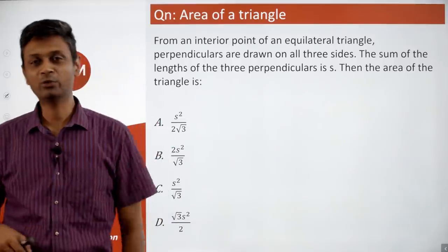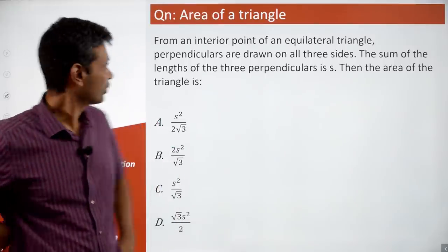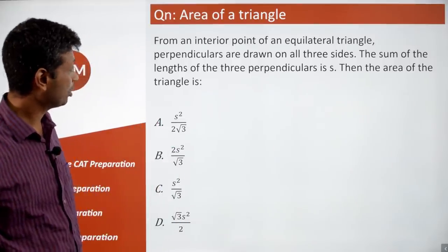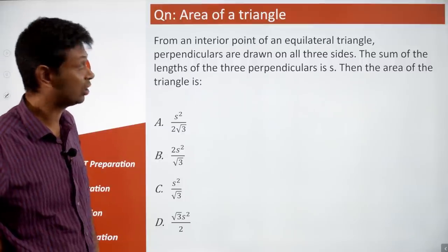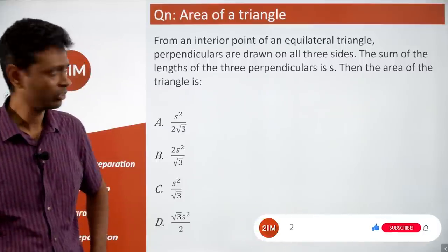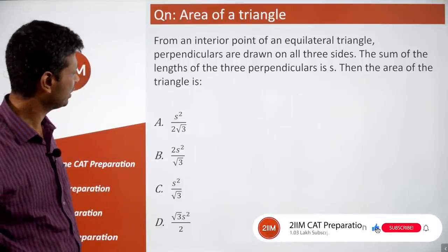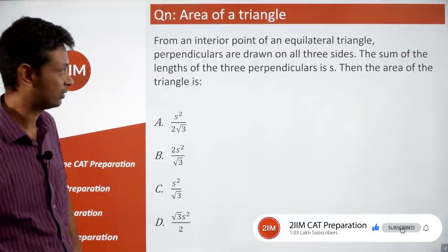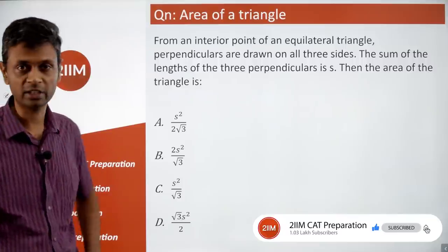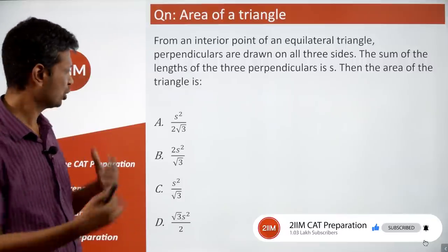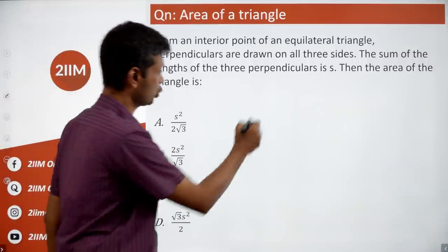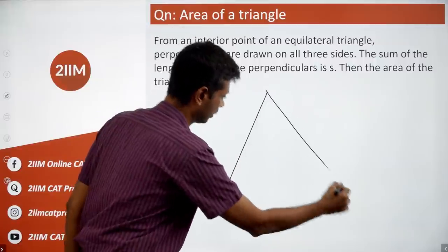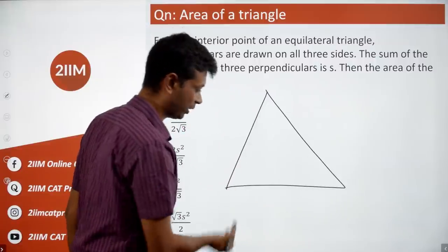From an interior point of an equilateral triangle, perpendiculars are drawn on all three sides. The sum of the lengths of the three perpendiculars is S and the area of the triangle. This is one fundamental fact you should know, but we'll start from scratch.